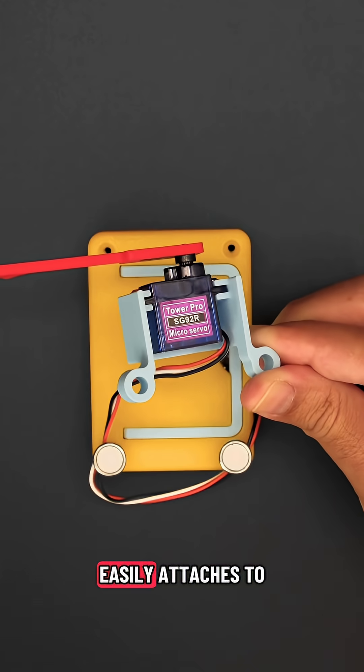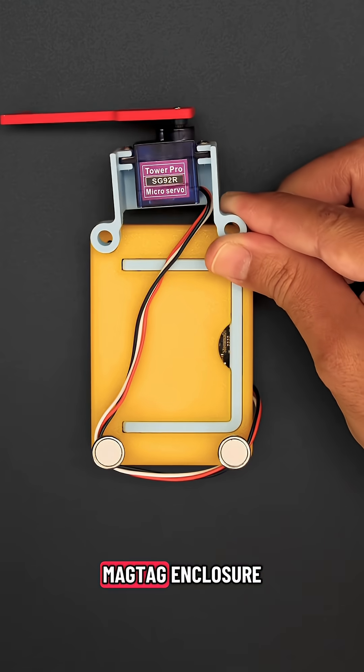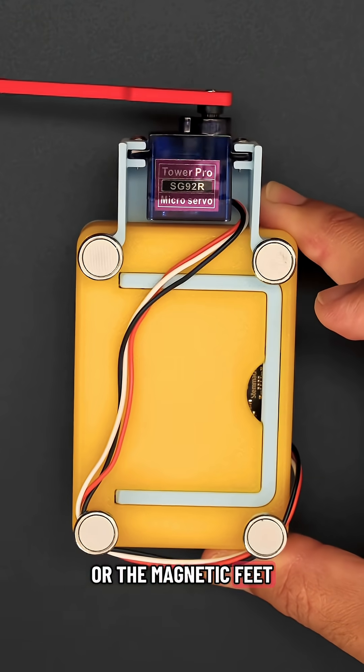The servo mount easily attaches to the side of the 3D printed MagTag enclosure using M3 fasteners or the magnetic feet.